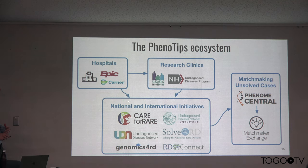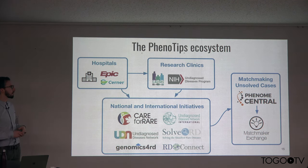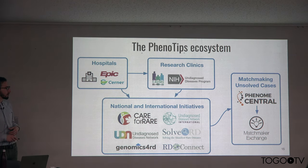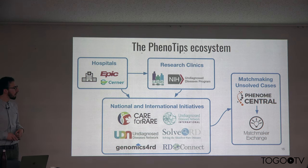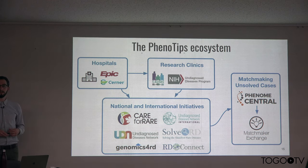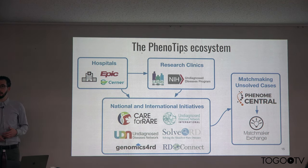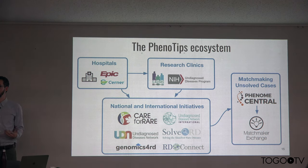Either hospitals send data directly and de-identified, or they send already de-identified research patient records from individual research clinics — like the undiagnosed disease program — to broader national or international initiatives like the Undiagnosed Disease Network or the Undiagnosed Disease Network International. From there, it is common for sites to connect to matchmaking portals for cases that remain undiagnosed, to identify other clinicians or cases likely to have the same condition and discover novel disease genes.